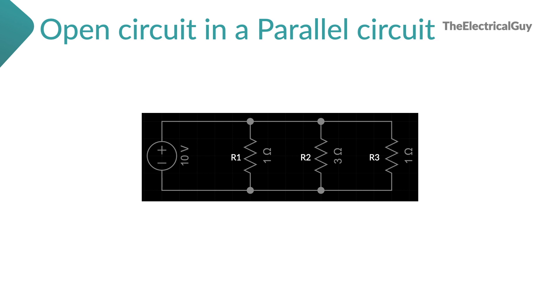Now this is the situation in case if the open circuit takes place in any of the branch of a parallel circuit. But if the open circuit is let's say here right after the voltage source, then the complete circuit is down. No current will flow through any of the branch.